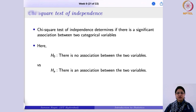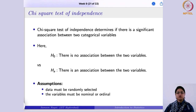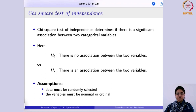The null hypothesis is that there is no association between the two variables — meaning they are independent. The alternative is that there is an association between the two variables. The assumptions are that data must be randomly selected and must be nominal or ordinal. Nominal variables have categories with no inherent ordering between levels, while in ordinal variables, there is an inherent ordering.